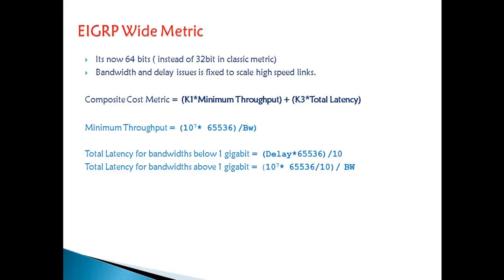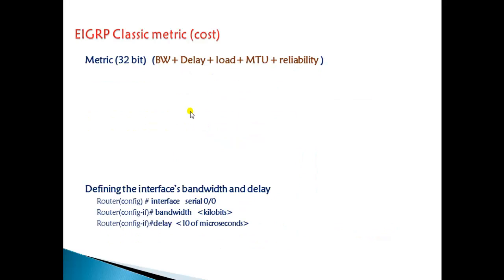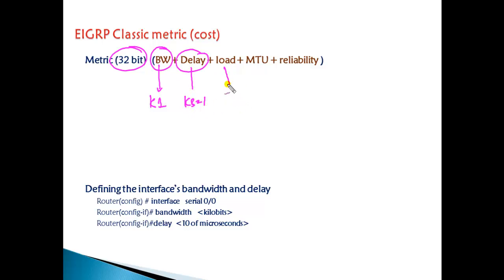In this section we'll talk about EIGRP wide metric, which was introduced by Cisco in the new EIGRP named mode configurations. Before we get into EIGRP wider metrics, let's cover some basics of EIGRP metric. In classic EIGRP, the metric is a 32-bit metric which includes bandwidth, delay, load, MTU, and reliability. By default, it uses bandwidth and delay — K1 is 1, K3 is 1, and the remaining values are zero, meaning they are not used in the metric calculation.